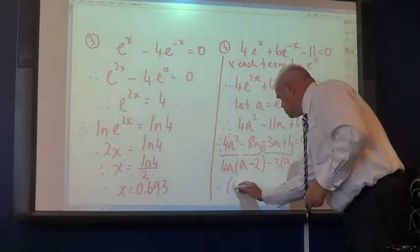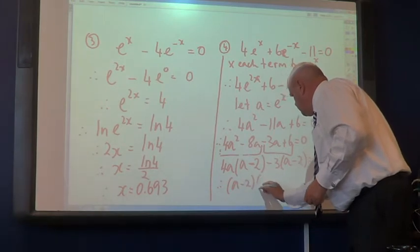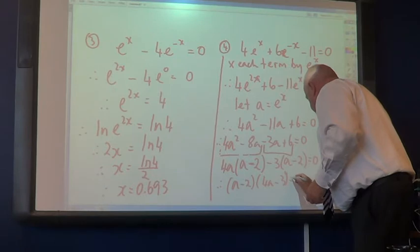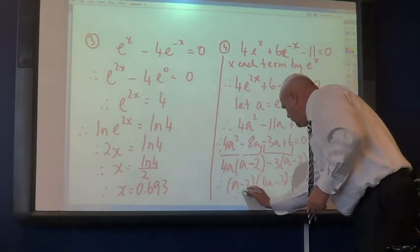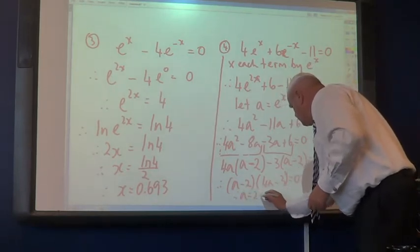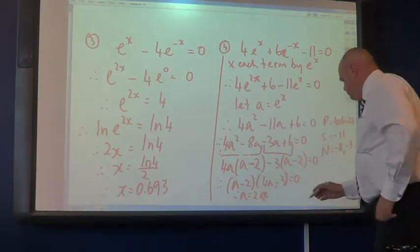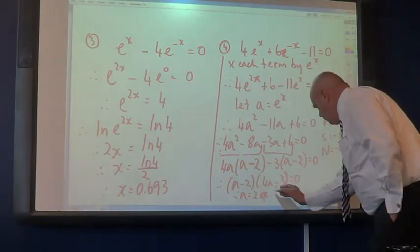Okay, this means that A minus 2 is a common factor for that side of the minus sign and that side as well. So, A minus 2, bracket, 4A minus 3, equals 0. Therefore, A equals 2. Or, 4A equals 3. Therefore, A will equal 3 quarters.